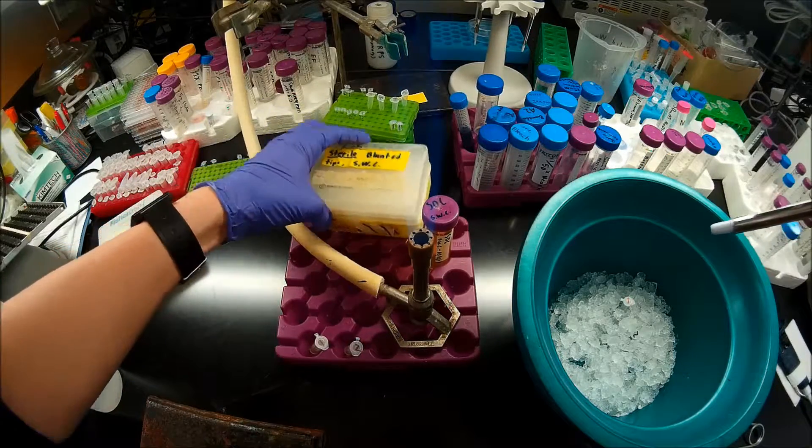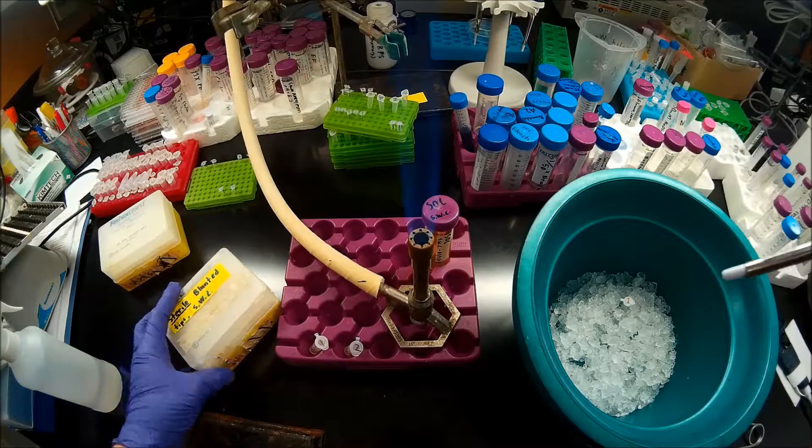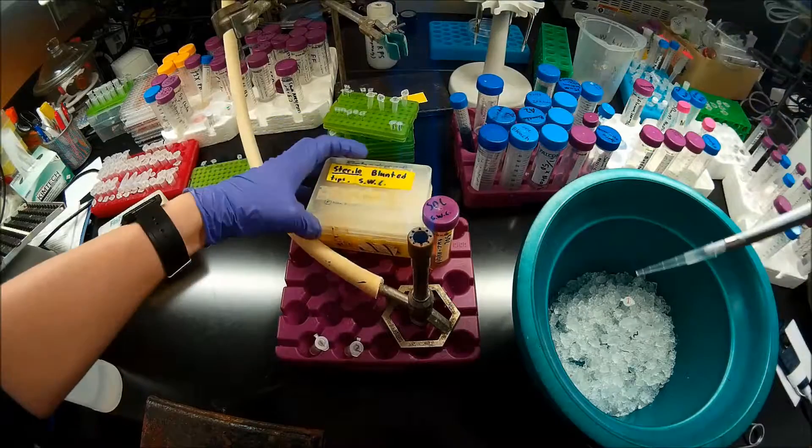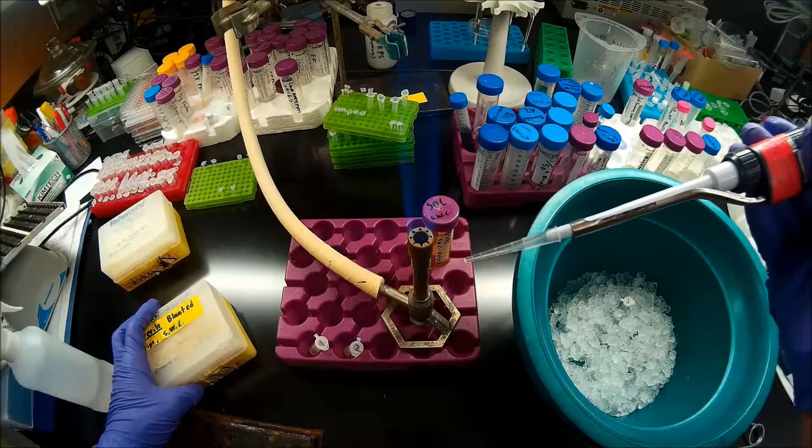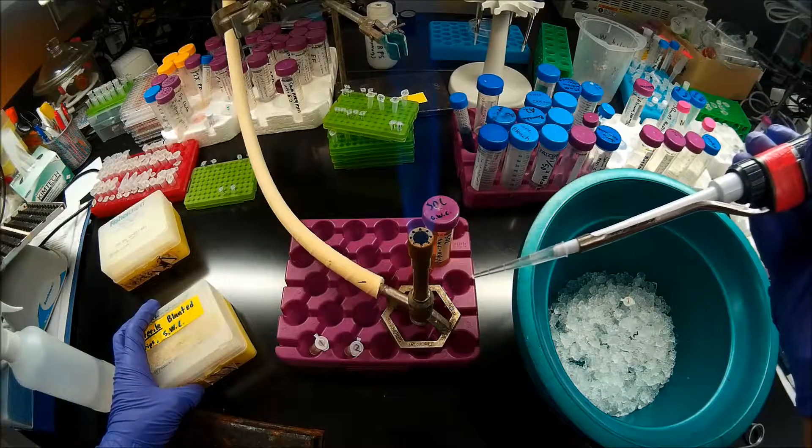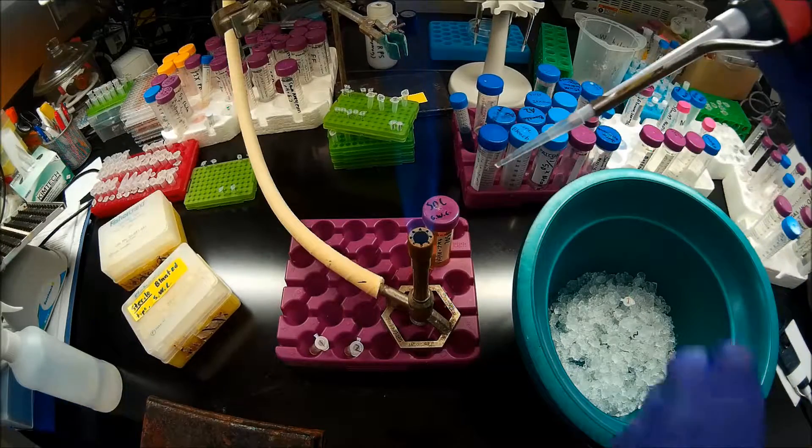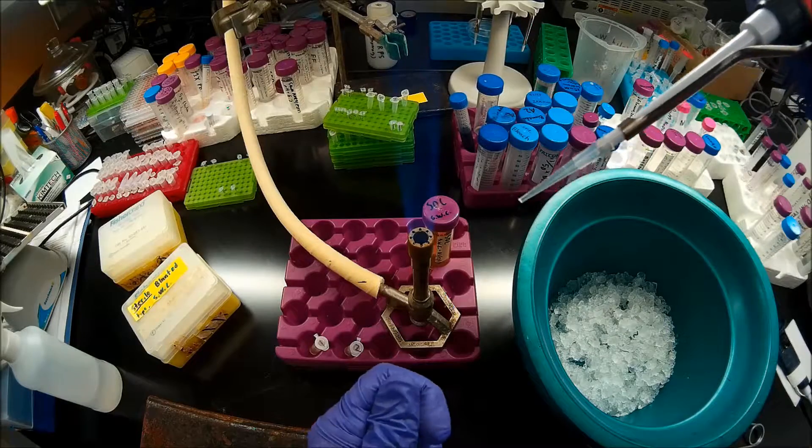So the reason I'm using these blunted pipette tips, as you can see, I've cut off the tip of the pipette tip before I autoclave them. The reason I'm doing that is competent cells are very delicate.